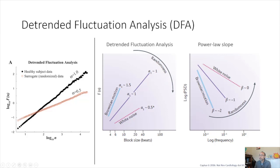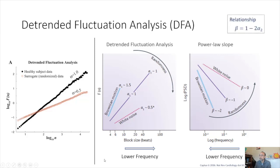The difference in directionality of the slope is because DFA represents lower frequencies at higher scales, whereas in the power law slope, lower frequencies occupy the left of the graph. So Brownian motion, dominated by low frequencies, has a higher positive slope in DFA but a negative slope in power law. There is a mathematical relationship between the two: beta equals 1 minus 2 times alpha.